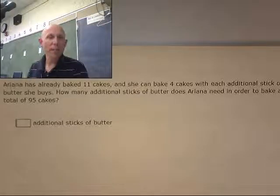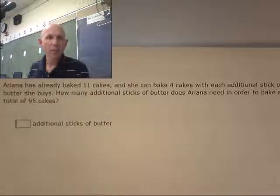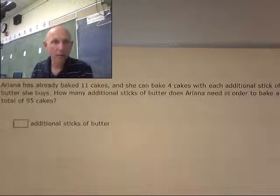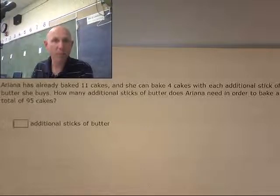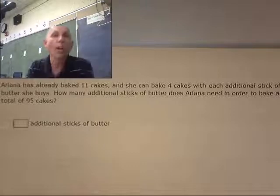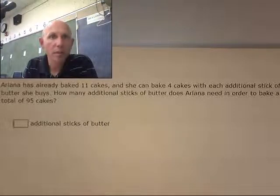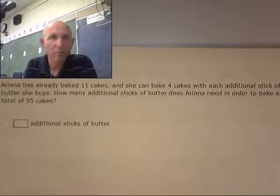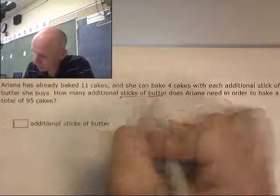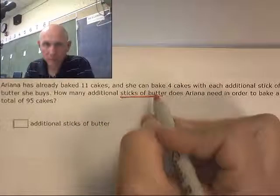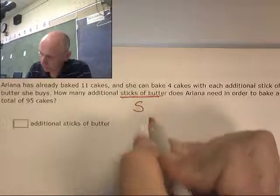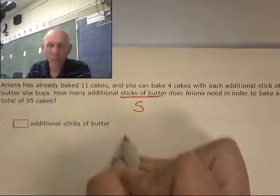Arianna has already baked 11 cakes. She can bake four cakes with each additional stick of butter she buys. How many additional sticks of butter does Arianna need in order to bake a total of 95 cakes? What am I looking for? Cakes? Sticks of butter? Money? I am looking for sticks of butter. What's our variable? You want to go with S?